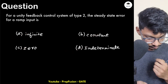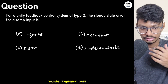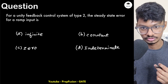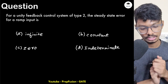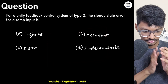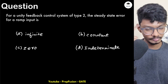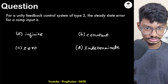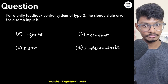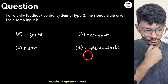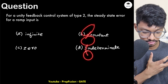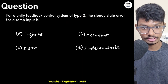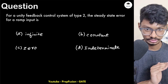We need to recall a few terms: kp, kv, and ka — the displacement, velocity, and acceleration error coefficients. From the standard table, as system type increases, steady-state error decreases. For type 0, there is finite steady-state error for unit step input; for type 1, finite error for unit ramp; for type 2, finite error for unit parabolic input. So for a type 2 system with a ramp input, we would expect zero steady-state error.